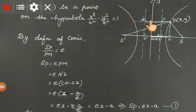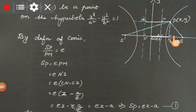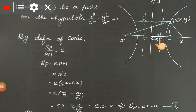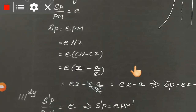Since we have plotted point P(x, y) on the hyperbola, the horizontal distance CN is x. So CN equals x. CZ is the distance from the center to the directrix Z, which from the derivation of coordinates is a over e. So CZ equals a/e.